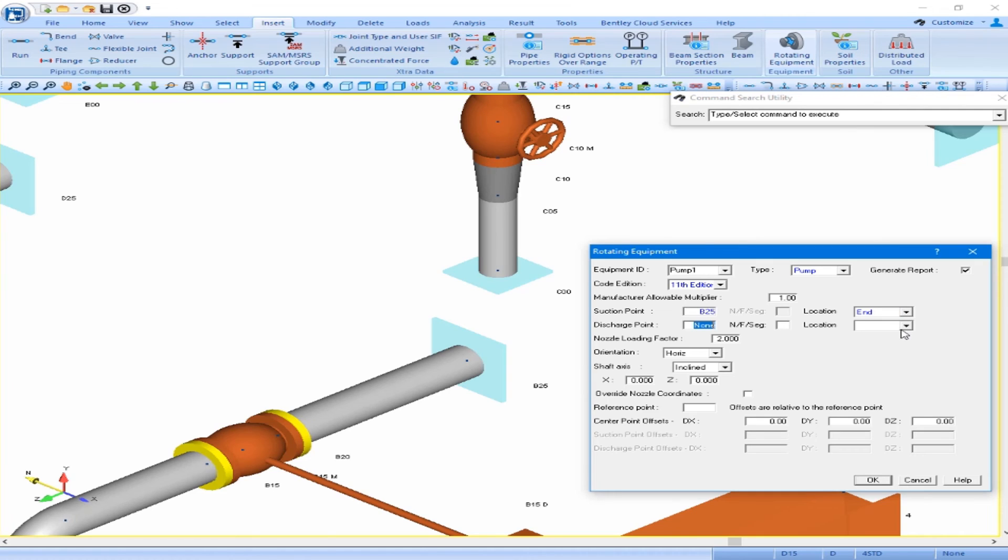And our pump discharge point is C00 which will be located on the top of the pump. This is going to be a horizontal pump and the shaft axis is the global Z axis. And when we're defining a pump, we need to define the pump center point.